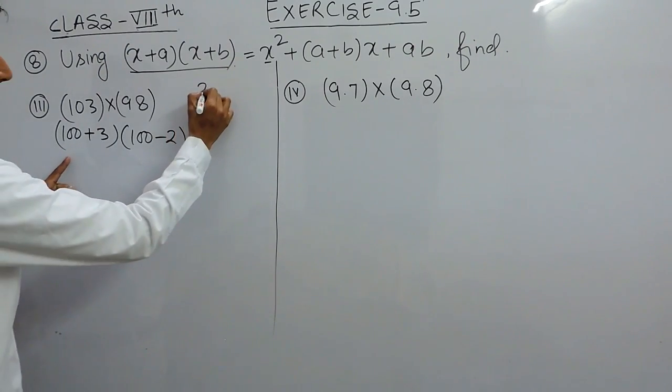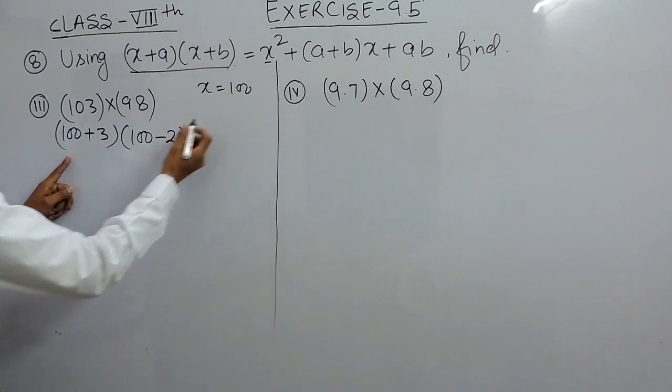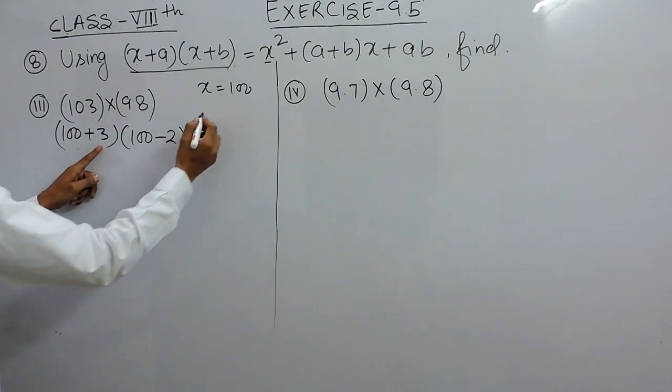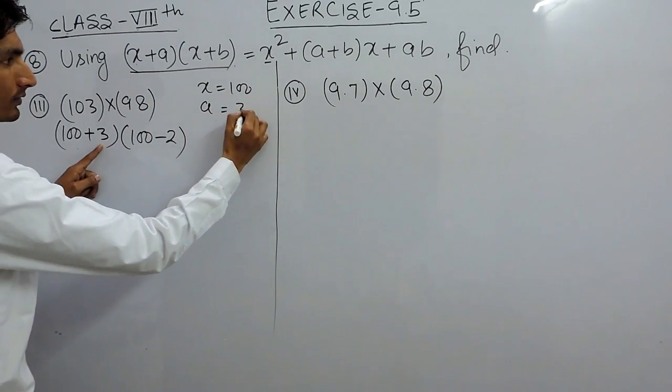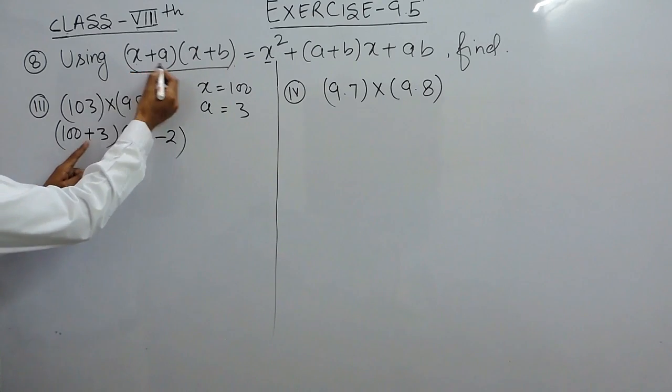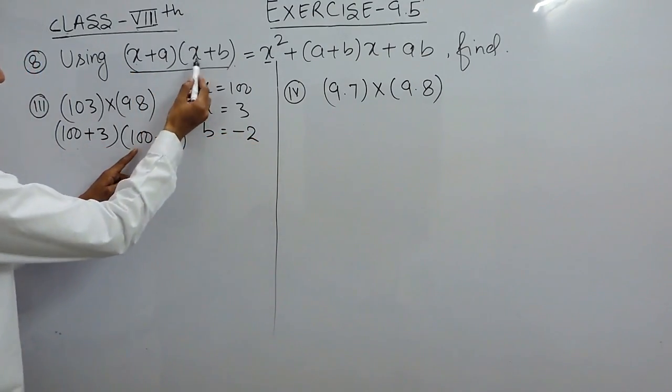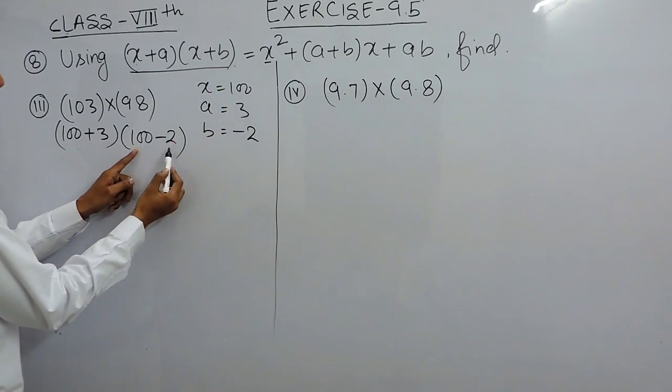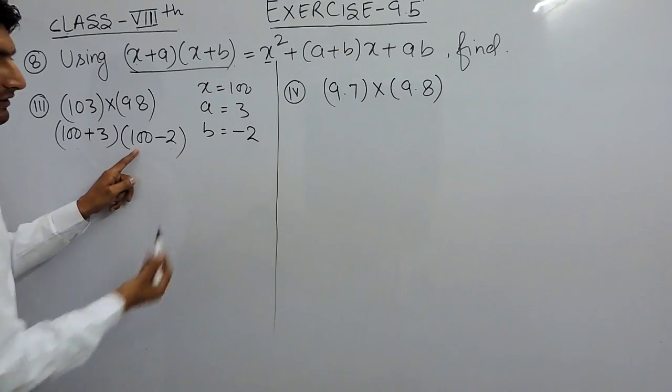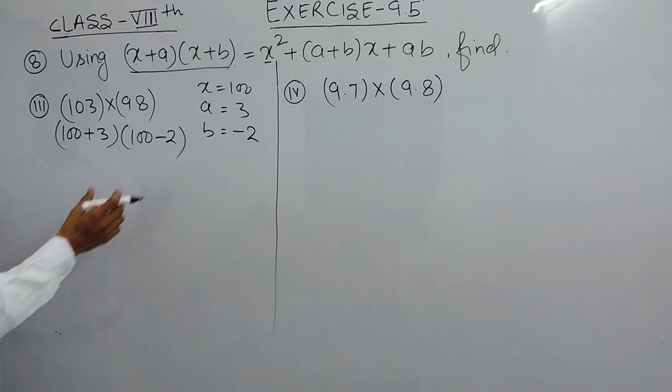Here x will become 100. Our a will become 3, so this is x plus a. Our b will become minus 2, because this is x minus 2, so this is x plus b where b equals minus 2.